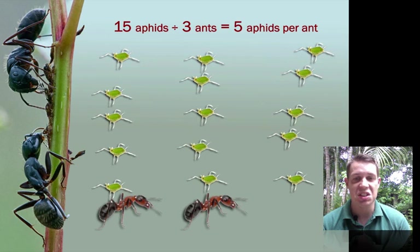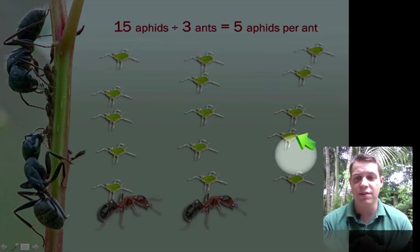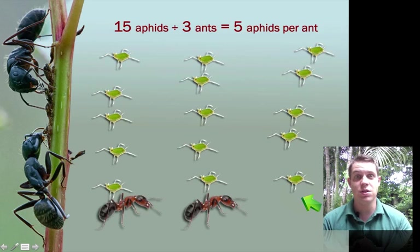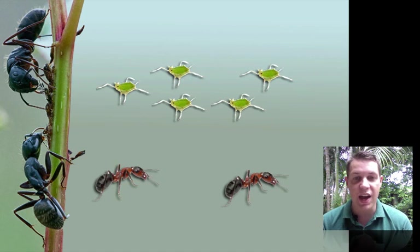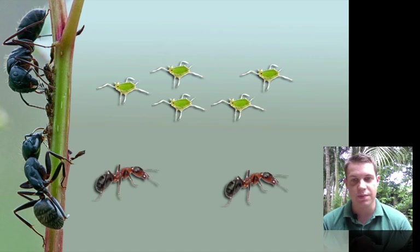That wasn't good. Now we only have 2 ants. And we have these poor 5 little aphids that have no ants to protect them. So now we have a new division problem. We have to now divide these 5 aphids between the 2 ants.